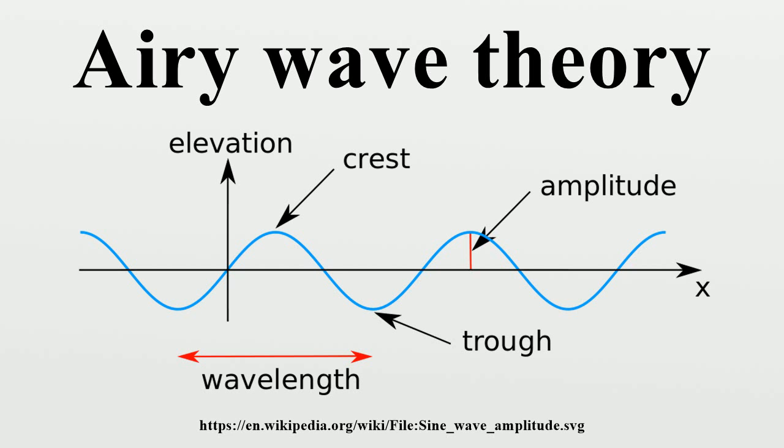Secondly, allowance is made for a mean flow velocity u in the horizontal direction and uniform over depth z. This introduces a Doppler shift in the dispersion relations.